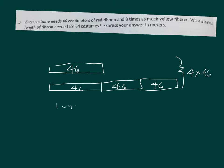So one unit equals 46 centimeters. Four units equals 4 times 46 centimeters. Which equals what'd you get for that? You get 184 centimeters.